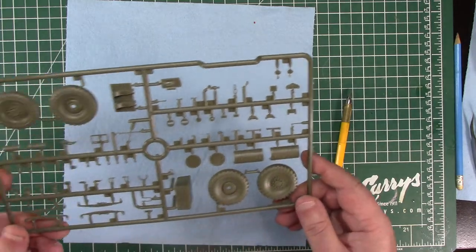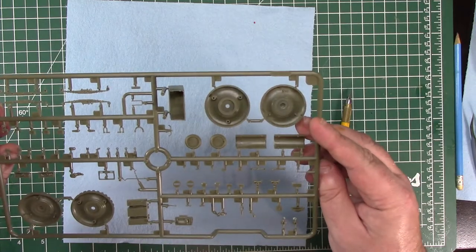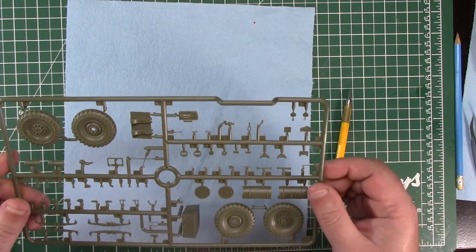Fuel can storage box, leaf springs, some odds and sods on there, headlight covers and etc.